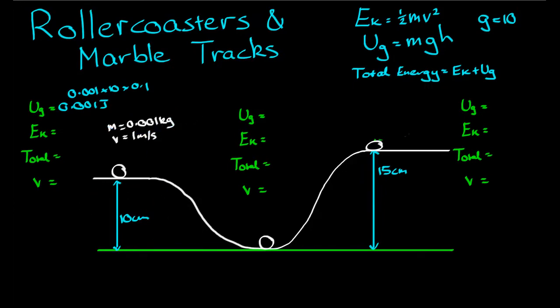Now, kinetic energy. If the marble has speed of one meter per second and mass 0.001 kilograms, then the kinetic energy is a half, 0.001 times one squared. That's equal to 0.0005 joules' worth of kinetic energy. Again, not very large, because the marble is not very heavy, and it's not moving very quickly.